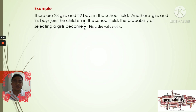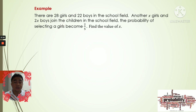This is number one. Number one says that there are 28 girls and 22 boys in the school field. Another x girls and 2x boys join the children in the school field. The probability of selecting a girl becomes two over five. Find the value of x. As you can see, we are using the variable x for the number of girls and boys.